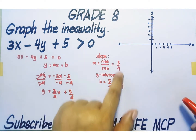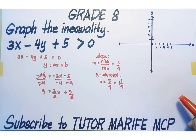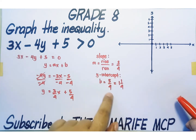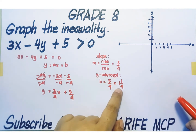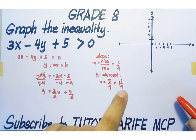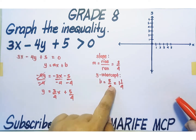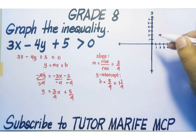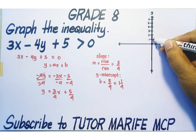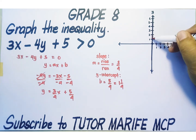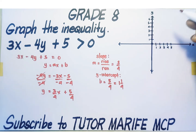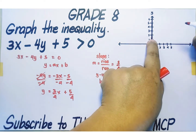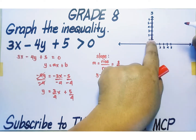Let's now use this information to set up the dashed boundary line. First, let's plot the y-intercept. The y-intercept is 1 and 1/4 — this is the y-coordinate of the y-intercept. The y-intercept is the point at which the boundary line cuts the y-axis. We divide this whole unit into 4 smaller units and take 1/4, giving us 1 and 1/4. This is our first point.